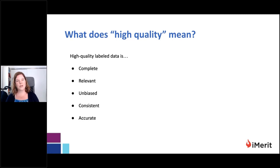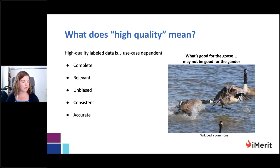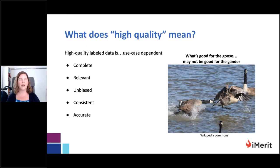When thinking about high quality labeled data, you might initially think of completeness, relevance, that the data be unbiased, consistent, and accurate. However, these attributes may not all carry the same weight, and they may not all be equally applicable for every use case. What's unbiased in one case may not serve your purpose in another, because biases may be informative or reflect real properties of the data. Completeness is really use-case dependent — what counts as appropriate coverage of the domain varies depending on what you're trying to accomplish.